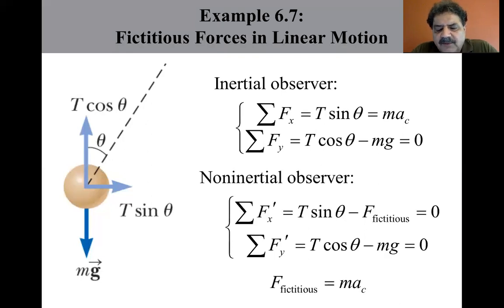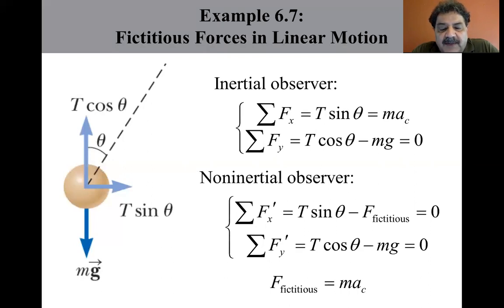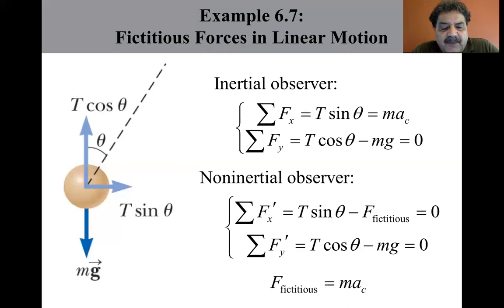The fictitious force is equal to mass times the centripetal acceleration, where a_c is the centripetal acceleration according to the inertial observer. The angle of the string will depend on where the upper end of the string is held relative to the center of the teacup. If the string is held directly over the center, the smartphone is not moving in a circular path and has no centripetal acceleration due to the motion of the teacup, so the string will not deviate from the vertical.